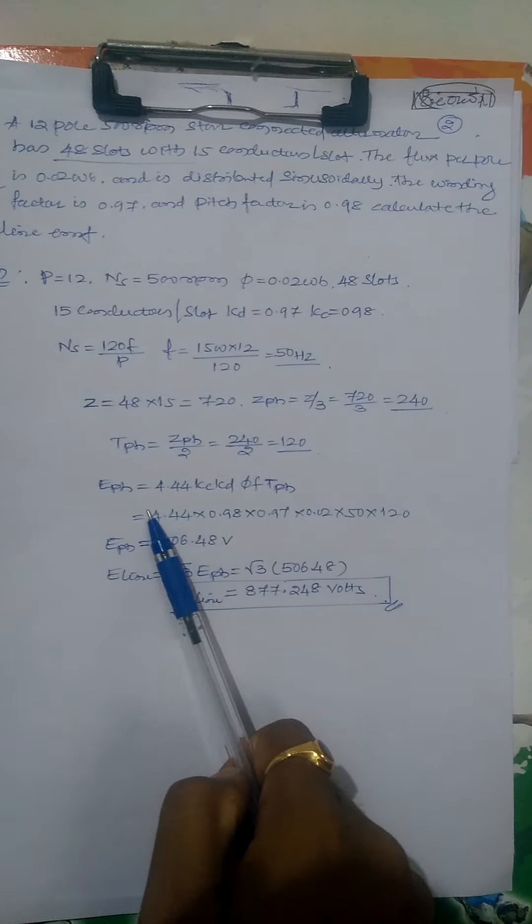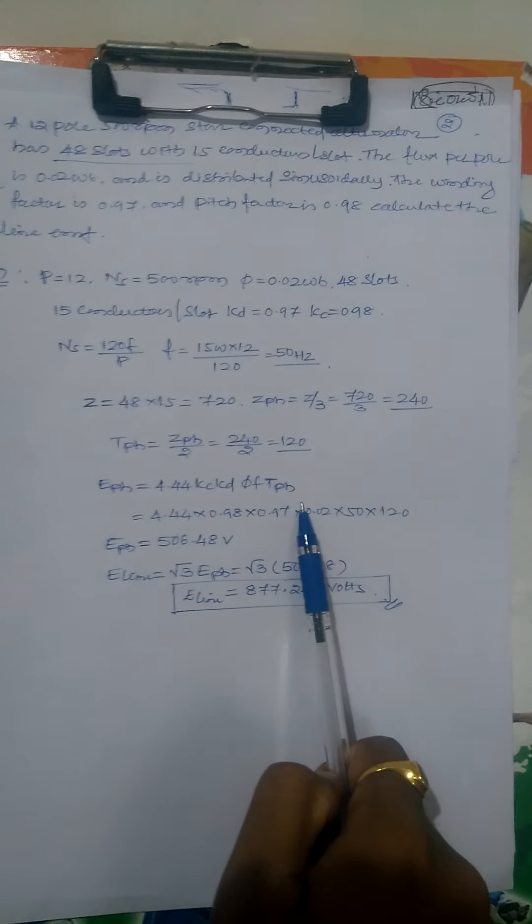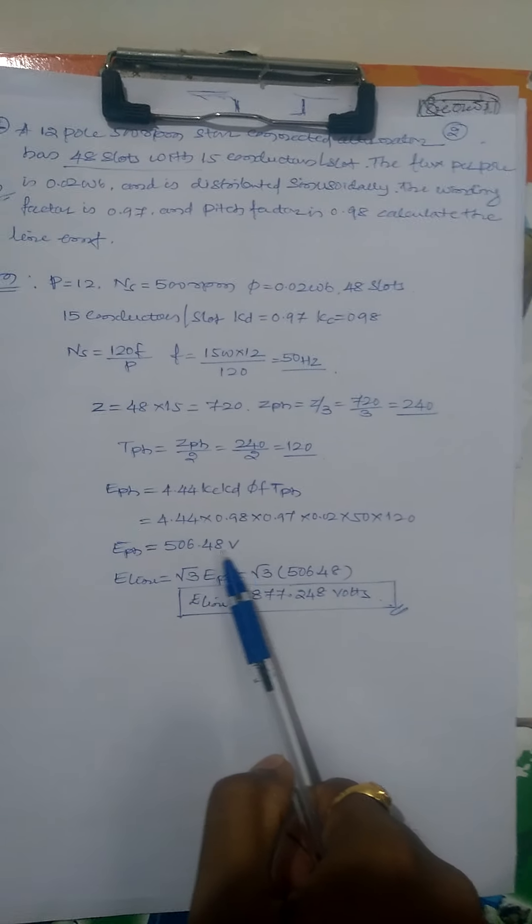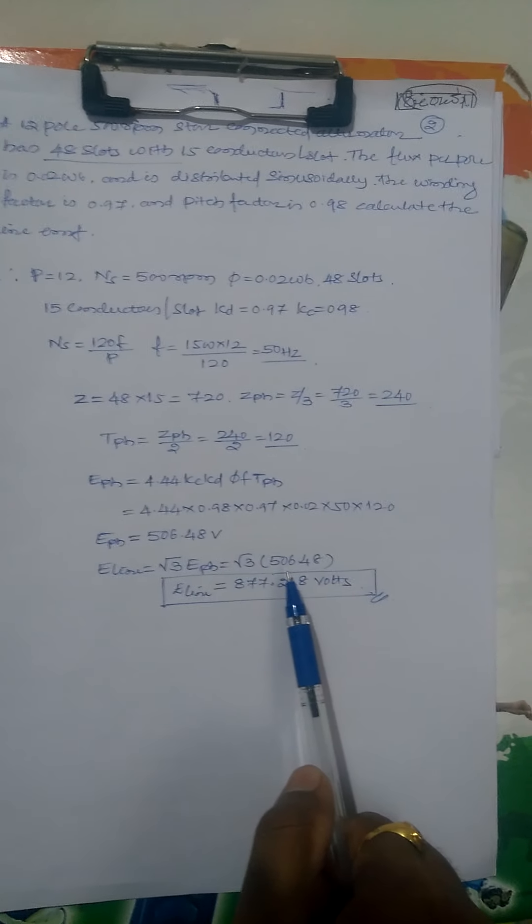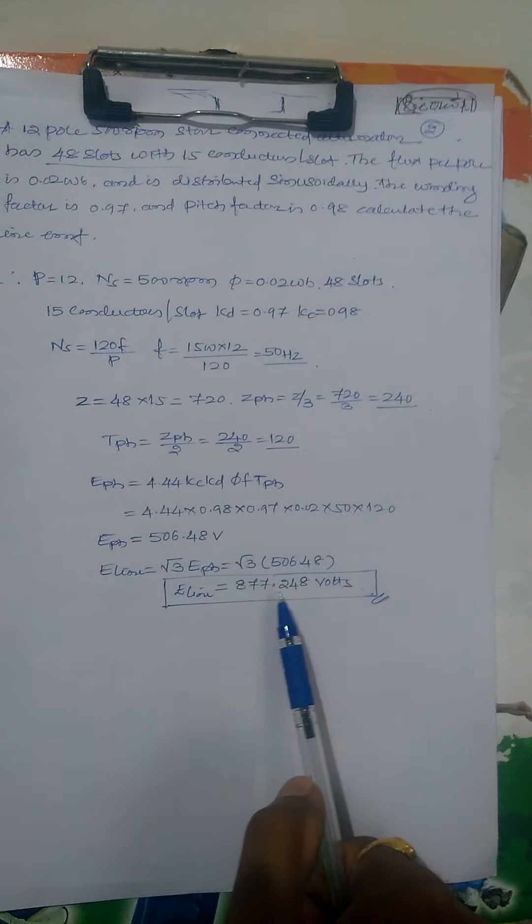E phase equals 4.44 KC KD flux frequency T phase. You get E phase voltage, that is 506.48 volts. Line voltage is root 3 into phase voltage: root 3 into 506.48, we get line voltage 877.248 volts.